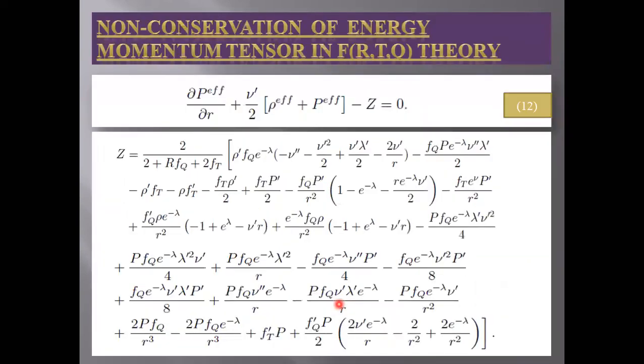Next, move towards the non-conservation of energy momentum tensor. The energy momentum tensor in this theory is non-conserved. As you can see here, the value of z is non-zero and the value is given below.